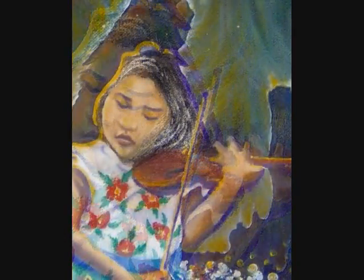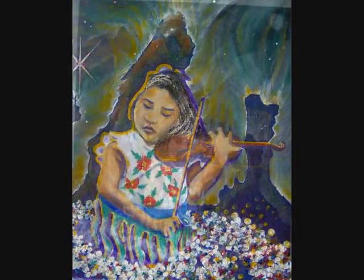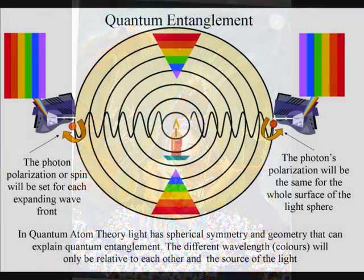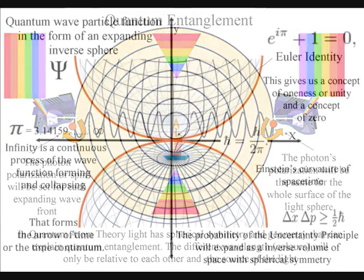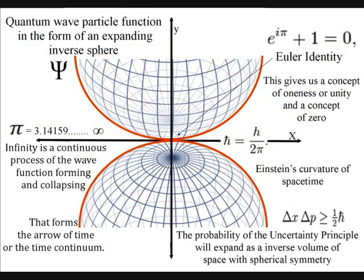Consciousness itself must be governed by the same process of symmetry breaking. Consciousness was responsible for the physical action that broke the symmetry, but the symmetry had to be there to start with. In quantum atom theory, this symmetry is the symmetry of the time continuum, that forms the geometry of space-time.